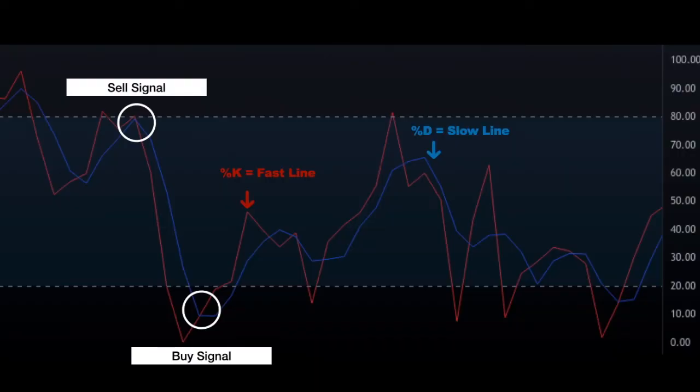The stochastic oscillator is formed by two lines. The red line is called the %K, also known as the fast line, and is more sensitive to price changes.